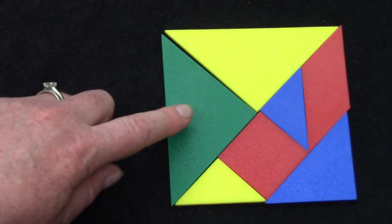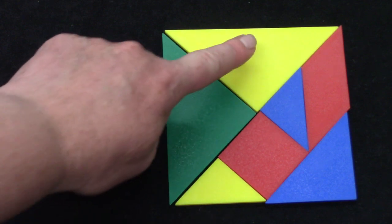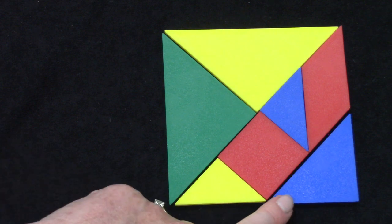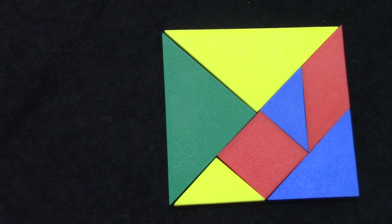A tangram is a seven-piece puzzle. One, two, three, four, five, six, seven. And we can use these to cover and play with designs.